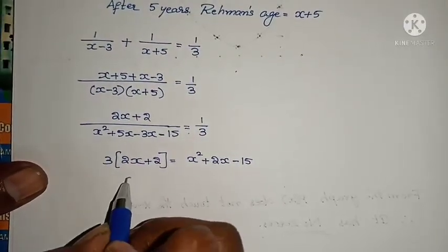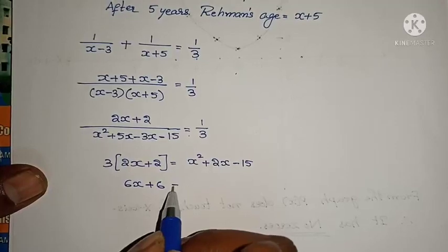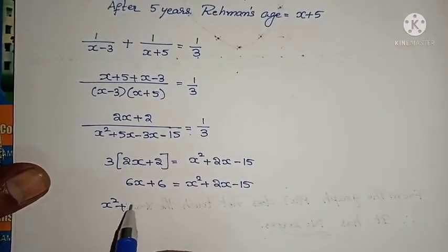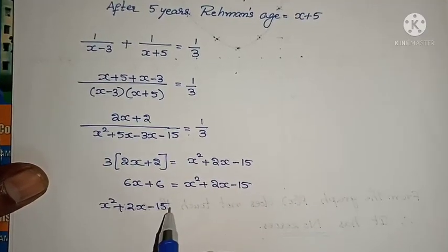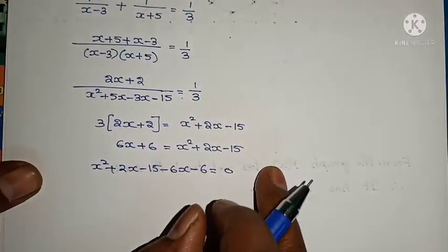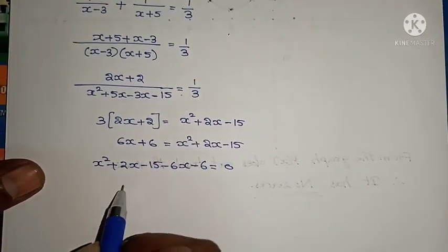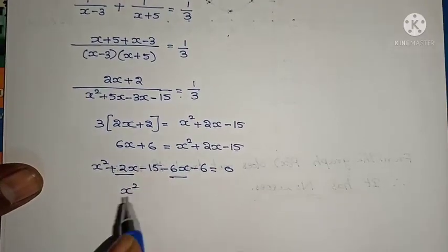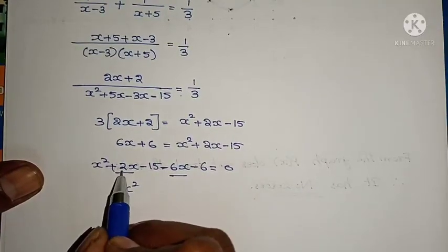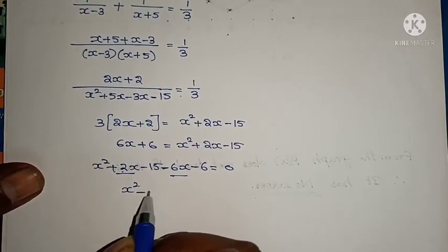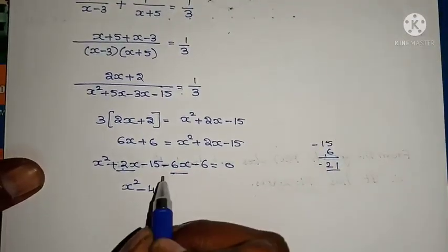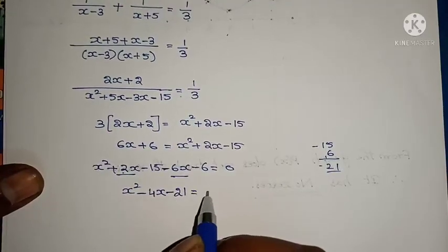Now multiply: 3 times 2X is 6X, 3 times 2 is 6. So 6X plus 6 equals X squared plus 2X minus 15. Send all terms to that side: X squared plus 2X minus 15 minus 6X minus 6 equals 0. Combining: X squared minus 4X minus 21 equals 0.